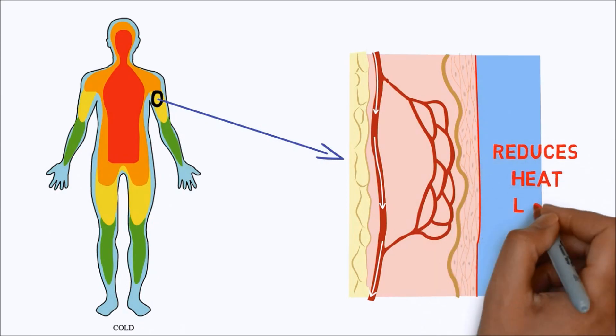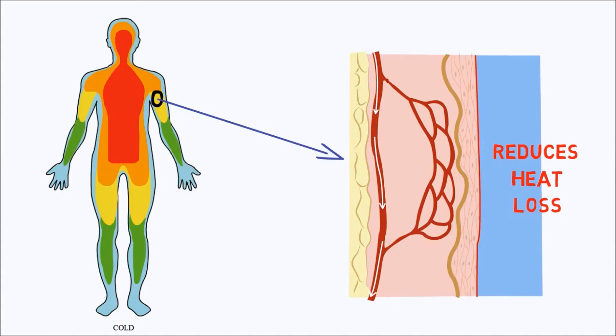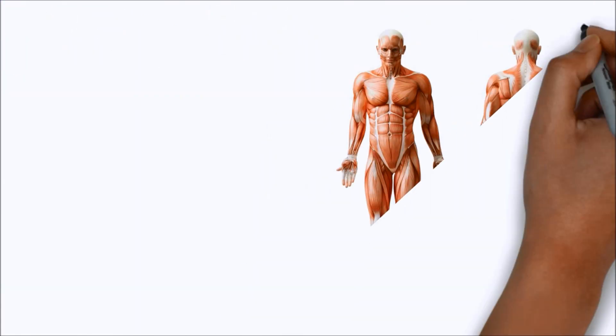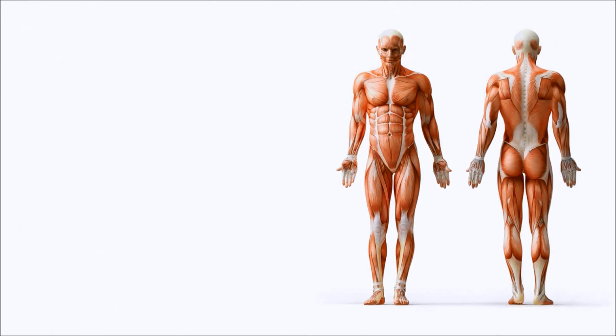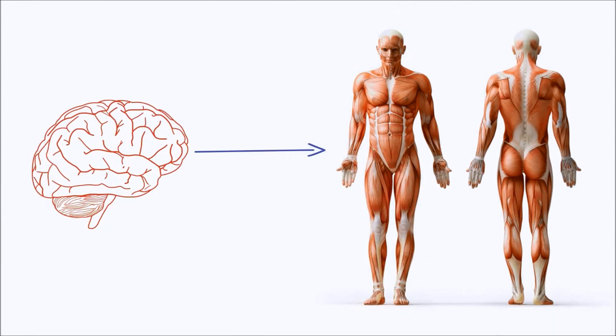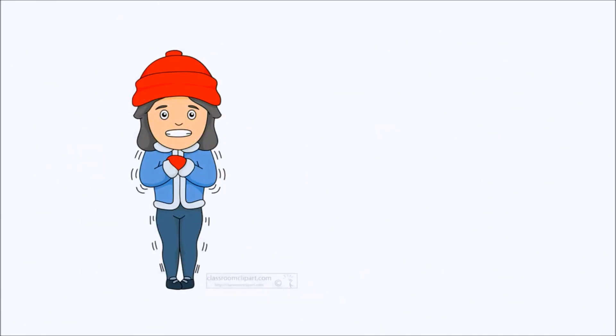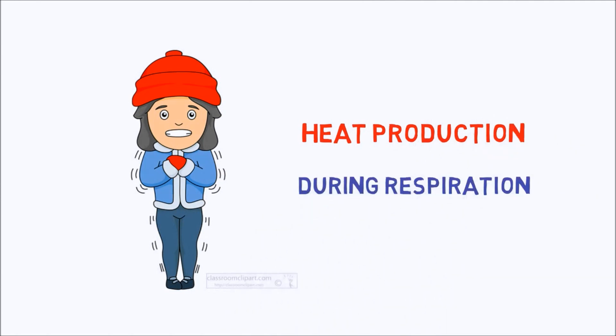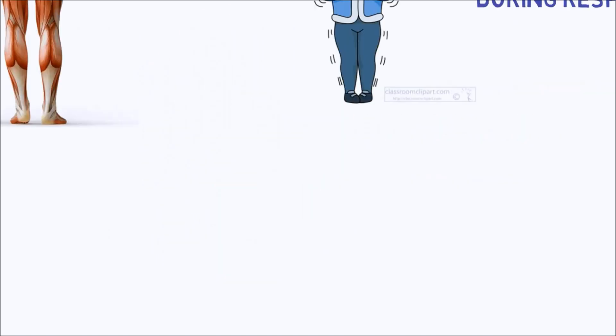Muscles attached to our skeleton can also receive signals from the hypothalamus. When we feel too cold, they respond by shivering. The rapid contraction of muscles during shivering results in heat being produced during respiration. This heat then warms up surrounding tissues.